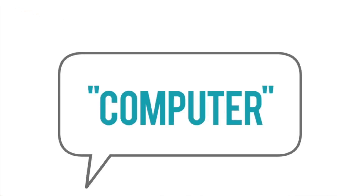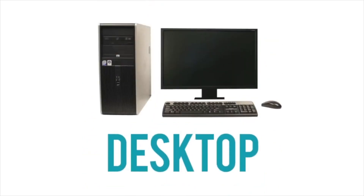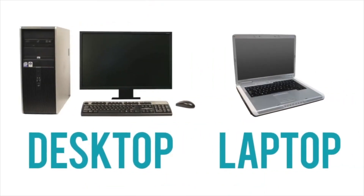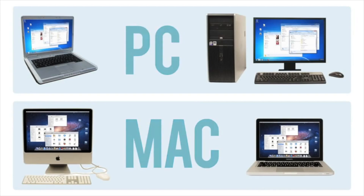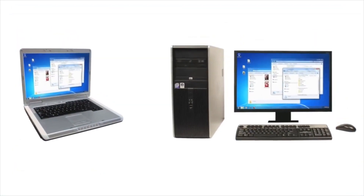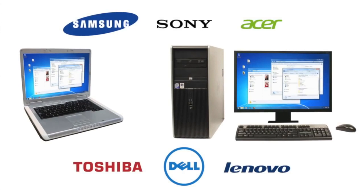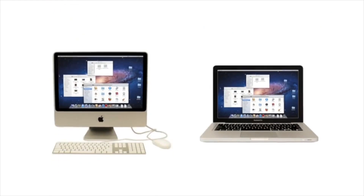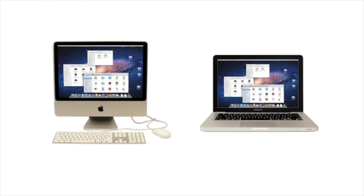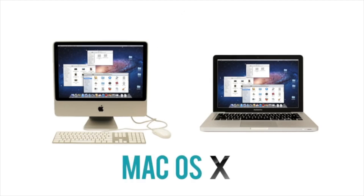When most people say computer, they are talking about a personal computer. This can be a desktop computer or a laptop computer, which has basically the same capabilities but in a more portable package. Personal computers come in two main styles: PC and Mac. PCs are the most common type — many companies make them, and they usually come with a Microsoft Windows operating system. Mac, or Macintosh computers, are all made by one company, Apple, and they come with a Mac OS X operating system.